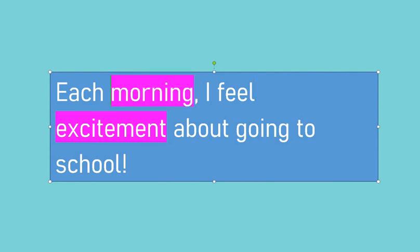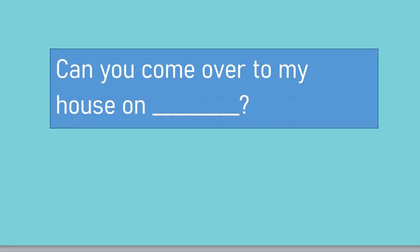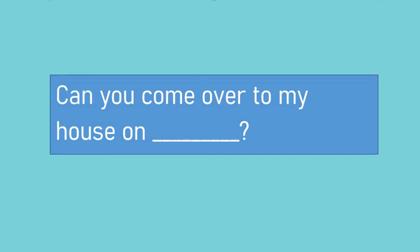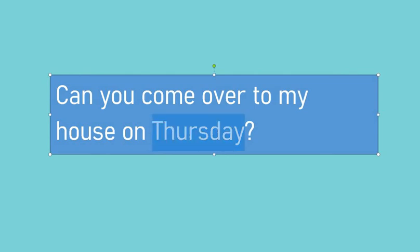Maybe you noticed 'morning' is another noun in that sentence — is morning a concrete or abstract noun? And 'school' is there too — 'going to school.' For the next sentence: 'Can you come over to my house on ___?' Should a concrete or abstract noun fit here? Can you come over on a person or a place? Actually, abstract nouns fit well — like 'Thursday.' We can't physically touch Thursday; if it's printed on a calendar, we're touching the calendar, not Thursday. So 'Can you come over to my house on Thursday?' fits an abstract noun well.